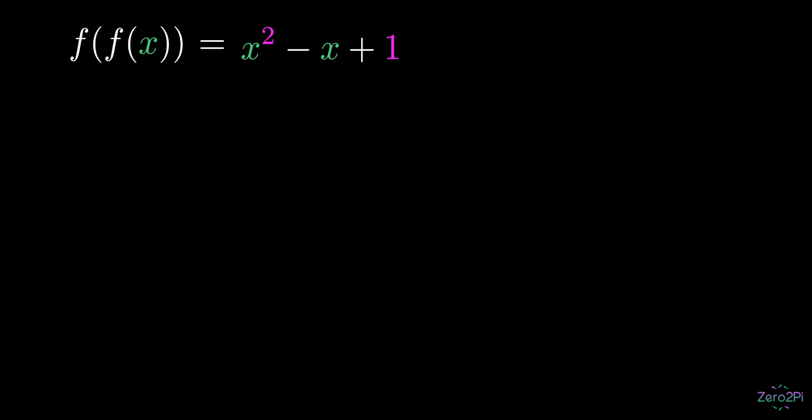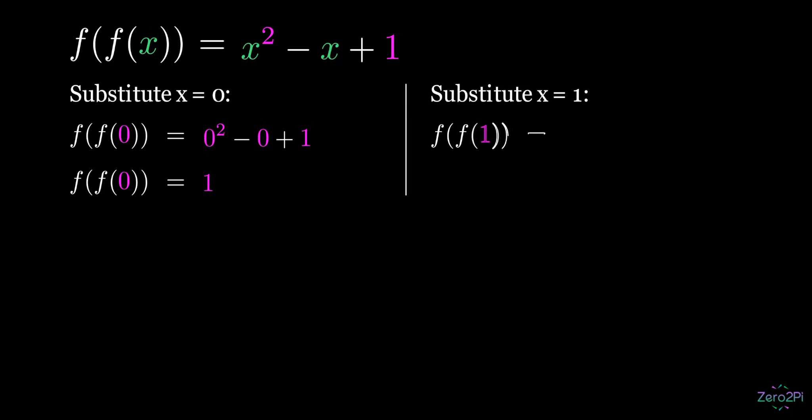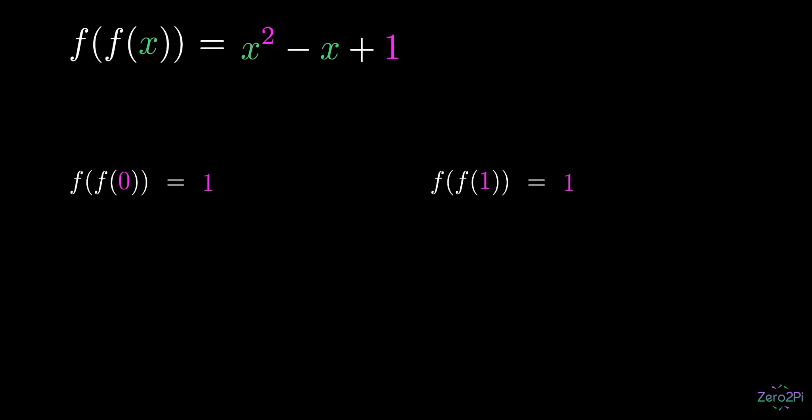To start, we evaluate at x equals 0, which gives us the following. Similarly, we evaluate f at x equals 1, which also equals 1. So now we know two things: f of f of 0 equals 1, and f of f of 1 equals 1.